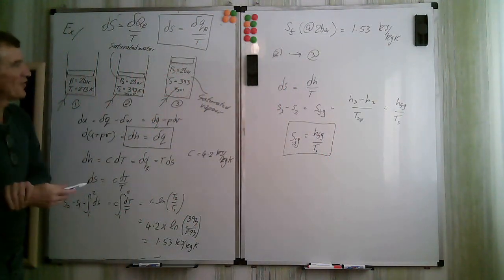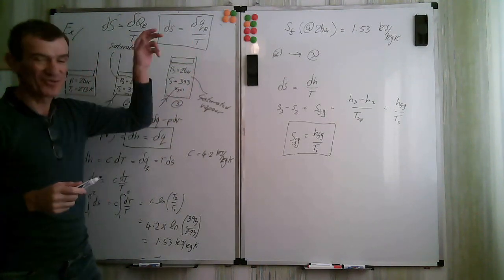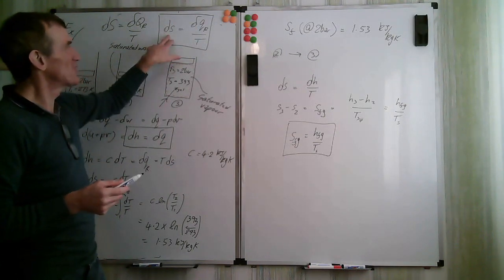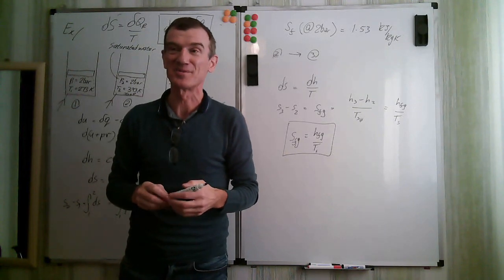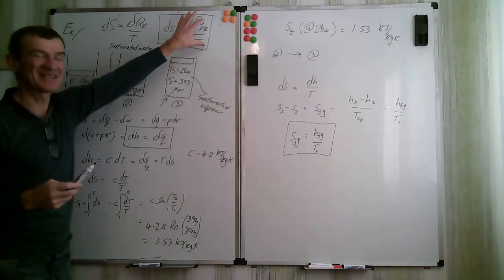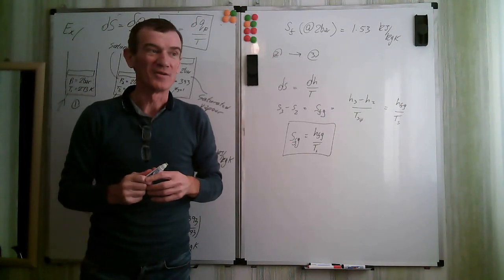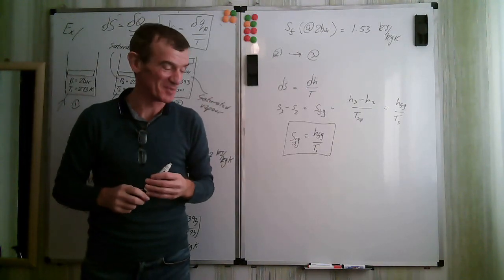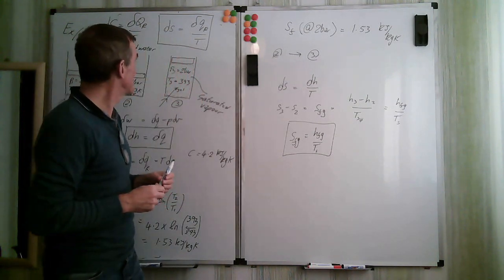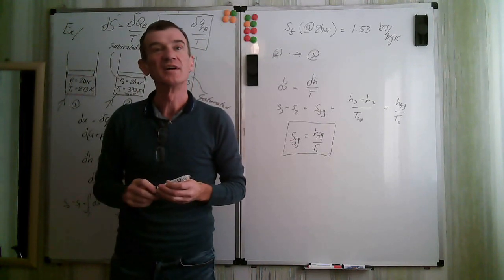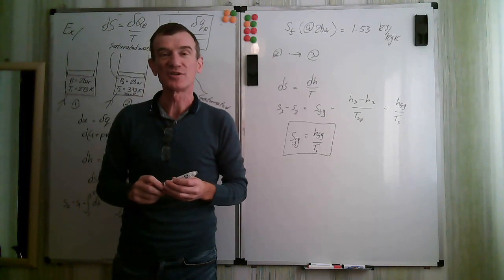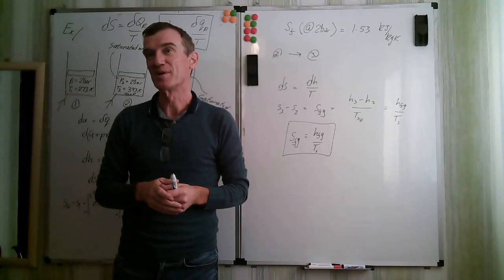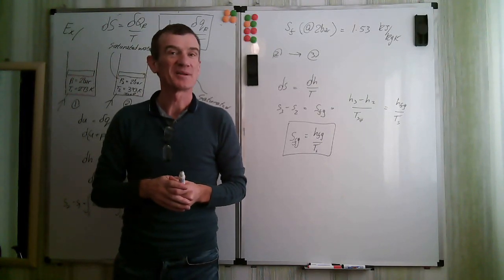So s_fg equals h_fg over T_sat, where h_fg is the latent heat of vaporization — these values are in the steam tables. That's how you do it for the final case. Generally I won't be applying this formula directly — we tend to use other formulas since we know entropy is a property and it's easier to relate it to other properties. Next time we'll look at the more general form, rate forms, and the transport equation for entropy, and apply it to thermodynamic machines.